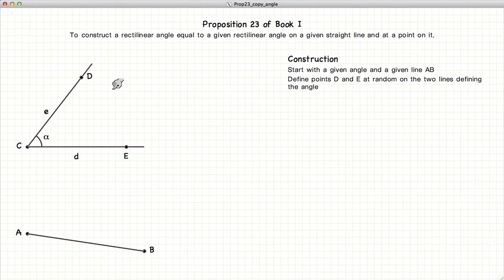First thing we do is we define two points on our lines, D and E. Doesn't matter where they are as long as they're on the lines. Construct a triangle CDE.